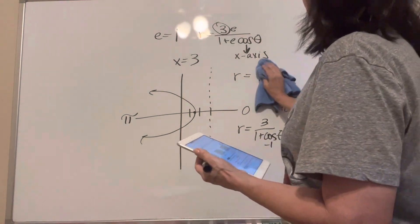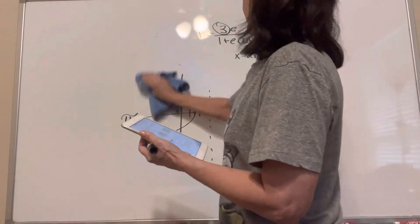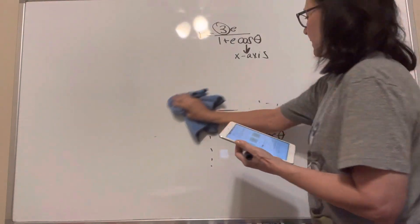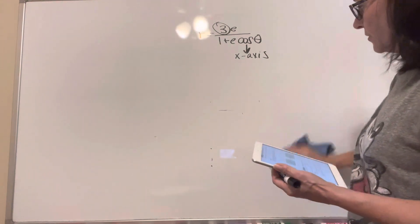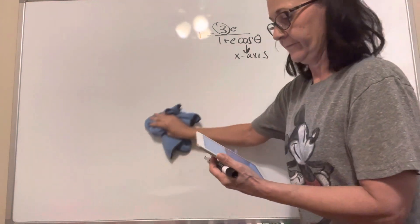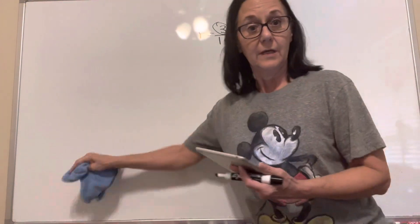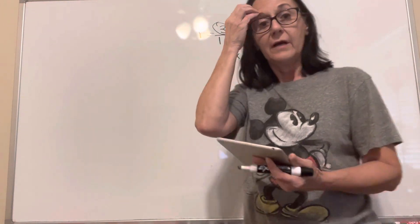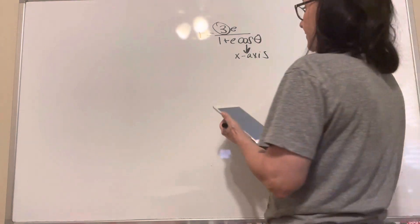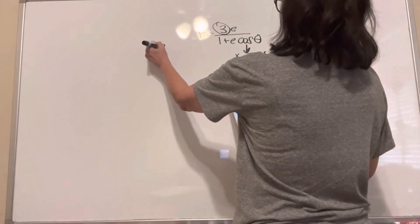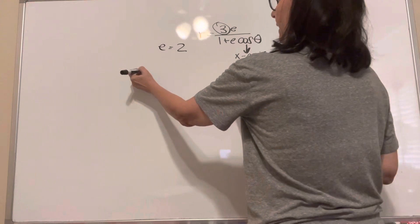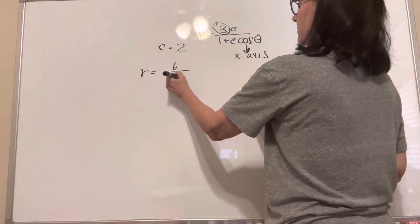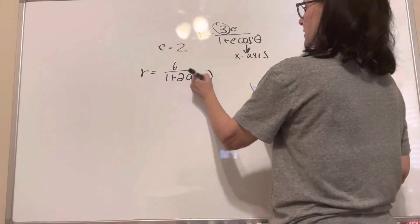Now the last one — it's still cosine, so I know that it's going to open left and right. My eccentricity is 2, so because my eccentricity is 2, I know I'm going to have a hyperbola. I'm going to have 2 vertices. So eccentricity is 2, and the radius is going to be 6 over 1 plus 2 cosine theta.